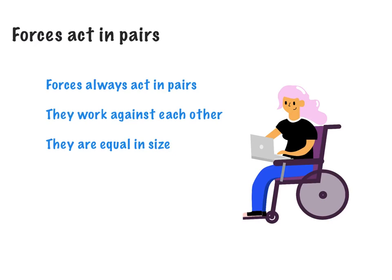Let's review and recap what we've said so far. Forces always act in pairs — there's normally at least two but there can be more. Forces tend to work against each other, and if no movement occurs we've got balanced or equal forces.